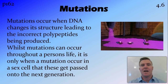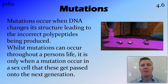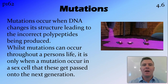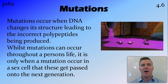A mutation is when a change occurs in the DNA which leads to the incorrect polypeptide being produced. We know that the genes on the chromosomes code for polypeptides, so when one of those genes is mutated it's not going to produce the correct polypeptide. These occur throughout a person's life, and they're only going to be passed on from parents to offspring when the mutation occurs in the sex cell.